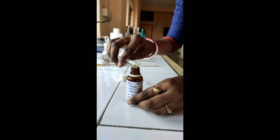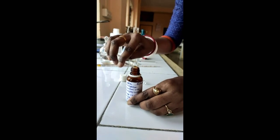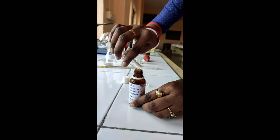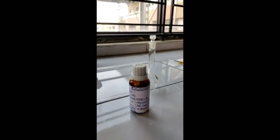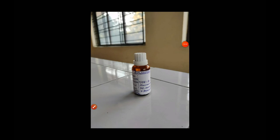The final solution was transferred into an amber-colored glass container, because chloroform is a light-sensitive composition and that is why it is stored in an amber-colored container. This is our final product of 25 ml Chloroform Spirit IP, stored in an airtight amber-colored container and placed in a cool, dry, and dark place.